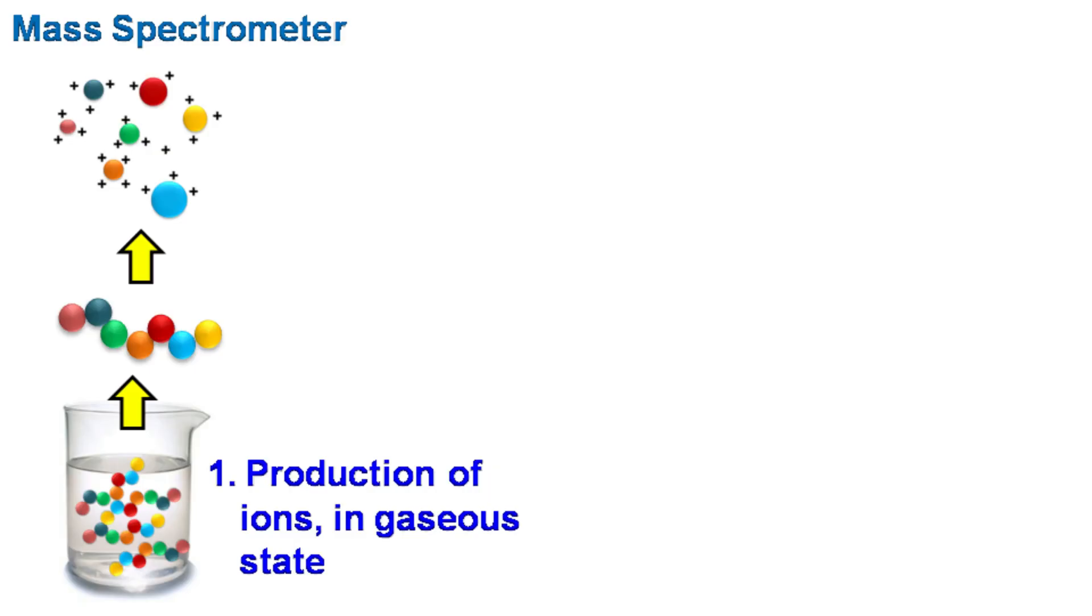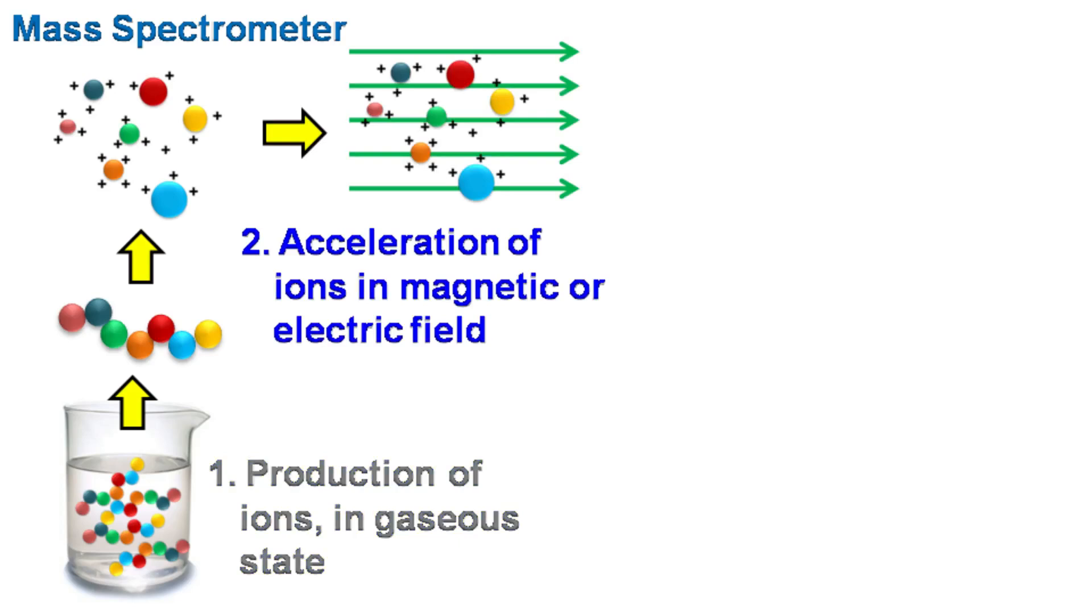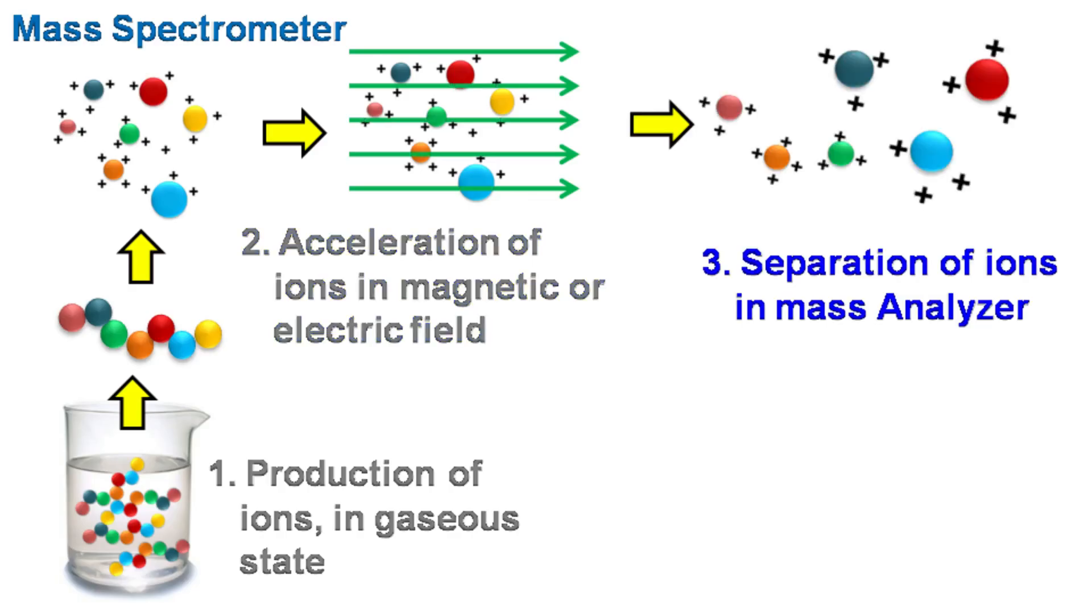The mass spectrometer performs four main functions: number one, production of ions in gaseous phase; number two, acceleration of ions using electric or magnetic field; number three, separation of ions in mass analyzer; and number four, detection of ions based on their mass to charge ratio.